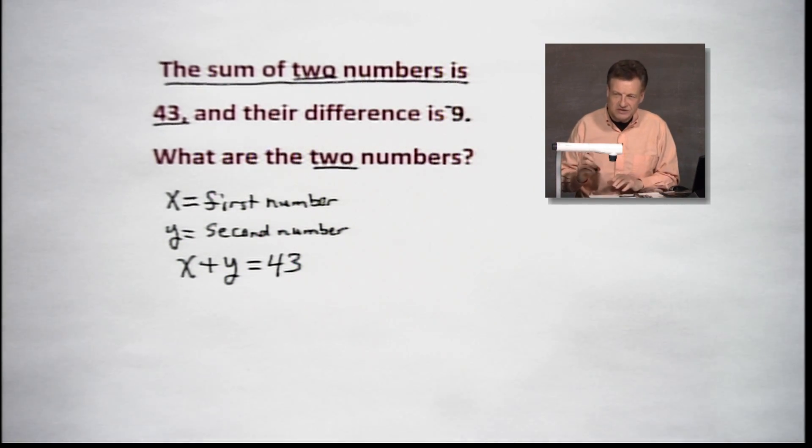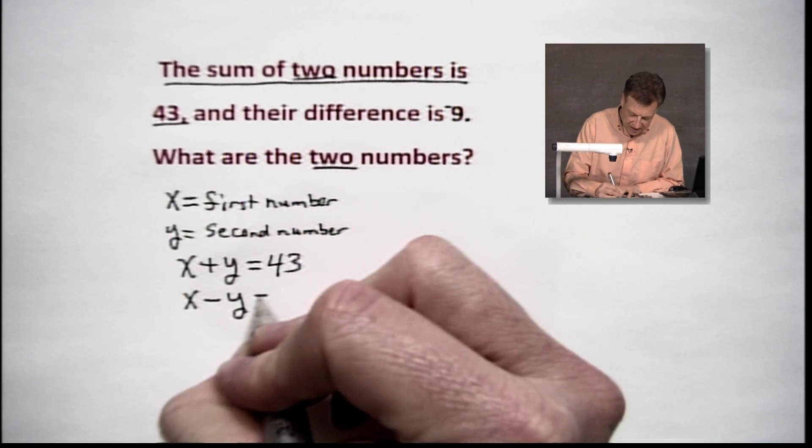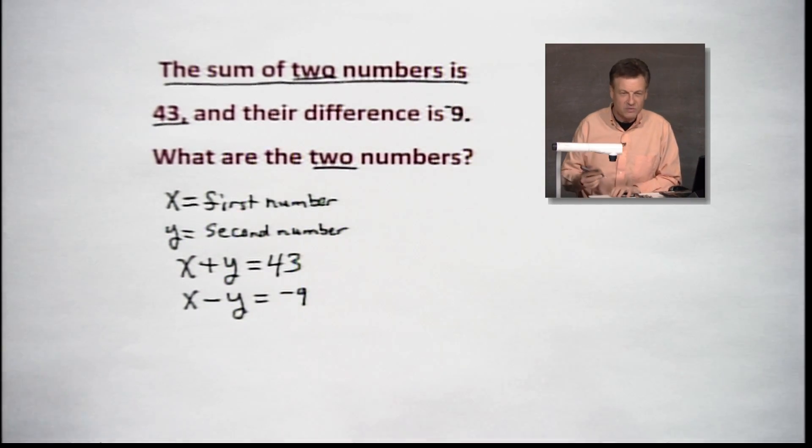Now, what about the difference? Difference means to subtract. So we're going to take X minus Y, and we're going to get negative 9, according to the way this problem was laid out for us. So we've got it all going here. Sum is 43. Difference, negative 9. What are the two numbers? Now it's time to get to the gist here.